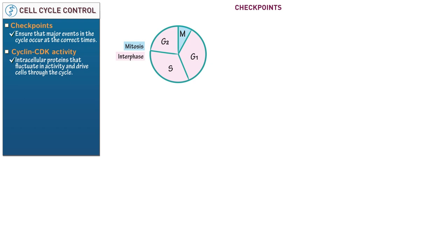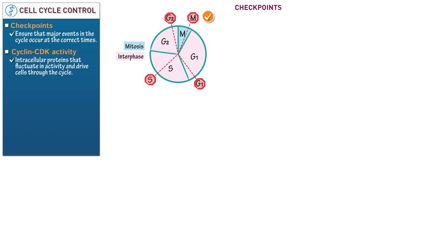Now let's add the major checkpoints. Show that the cell must pass through the following: the G1 checkpoint to enter the S phase, the S checkpoint to begin and complete the S phase, the G2 checkpoint to enter mitosis, and the spindle assembly checkpoint in mitosis to enter anaphase.